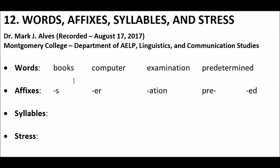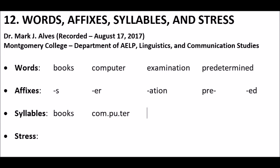Now let's consider the number of syllables in each word. A simplistic way to count the number of syllables is to count the number of pulses we produce when we say them. So let's try it. 'Books' — one pulse, one syllable. 'Computer' — let's put some dots between them: com-pu-ter, three pulses. 'Examination' — five pulses, five syllables. Finally, 'predetermined' — four syllables.